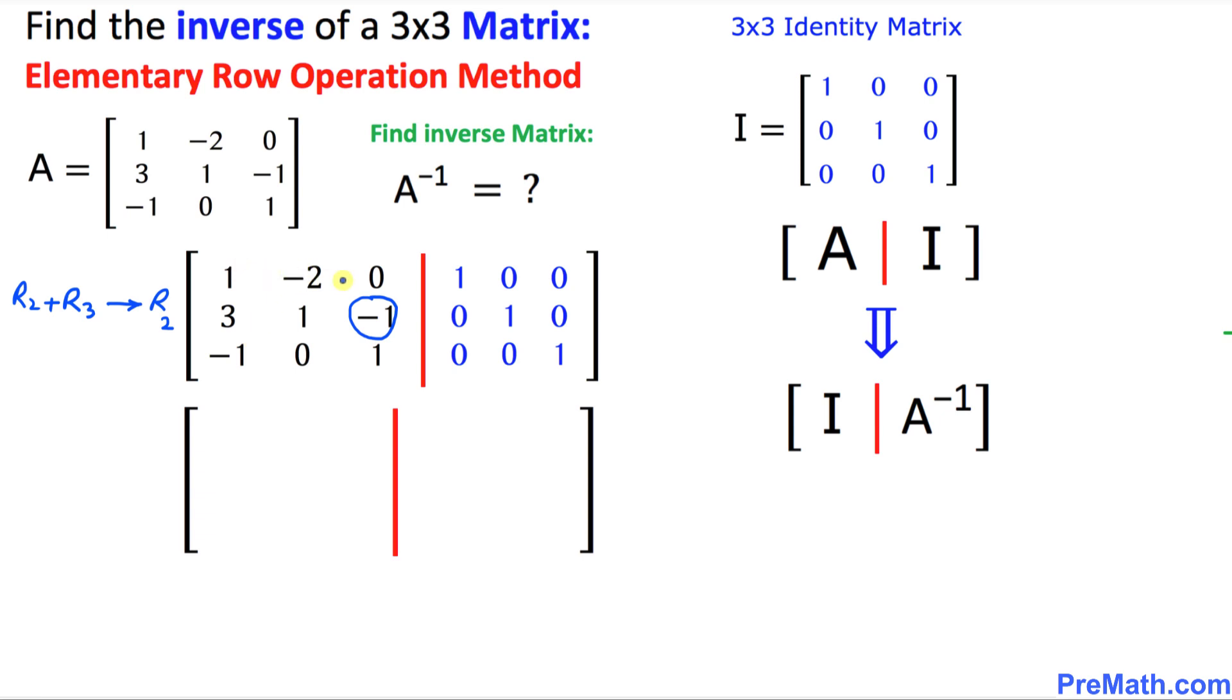back to row 2. So that means this is simply going to become 1. The first row is not going to change, so I'm going to just write as it is: 1, negative 2, 0. And on this side, 1, 0,